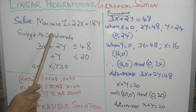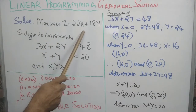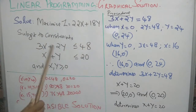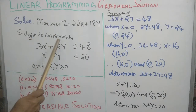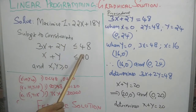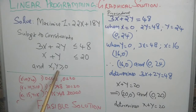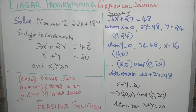Here is a problem. Maximize Z equal to 22x plus 18y, subject to constraints: 3x plus 2y less than or equal to 48, x plus y less than or equal to 20, and x, y greater than or equal to 0. We are familiar with the linear programming problem and its components.